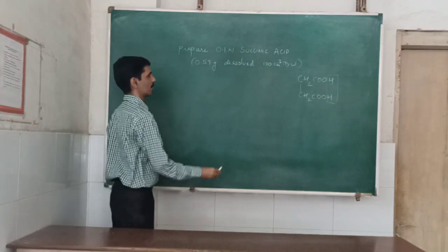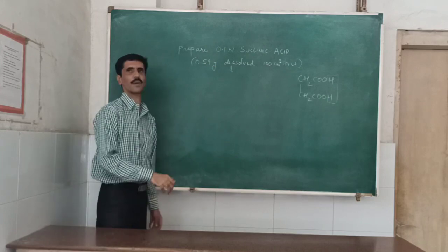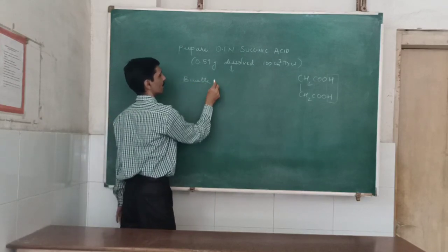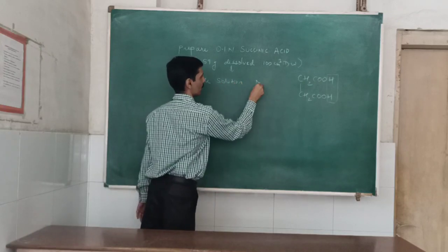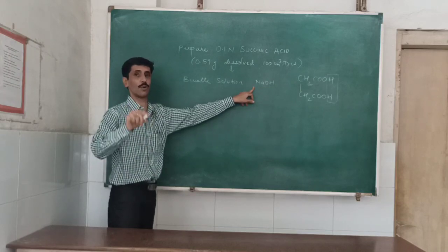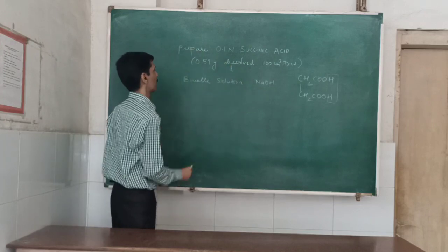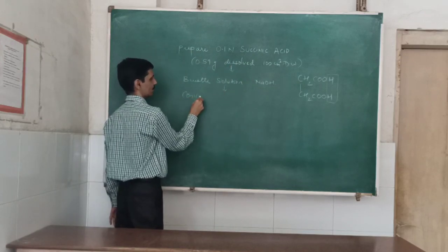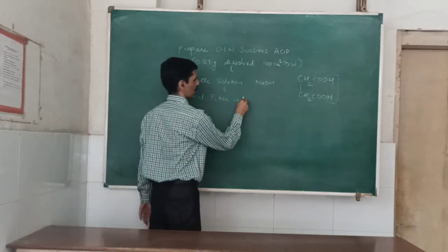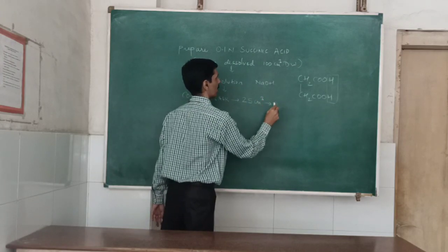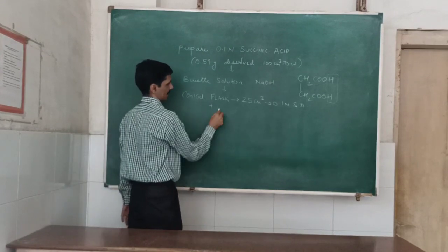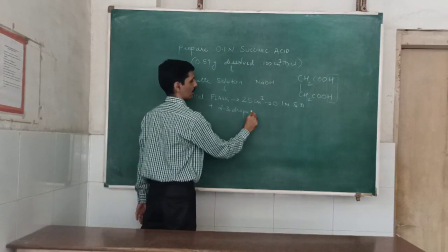Next, we are going to fill the burette solution, and that burette solution is NaOH. The exact normality of NaOH is what we don't know, and that is our aim — to standardize, to find out the exact normality of NaOH. In the conical flask, we are going to pipette out 25 cm³ of 0.1 normal succinic acid. To this, we are going to add 2 to 3 drops of phenolphthalein indicator.